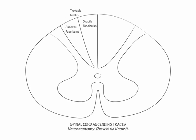Now label the long, narrow anterolateral system in the anterior funiculus. The anterolateral system comprises small diameter sensory pathways. They carry non-discriminative touch, pain, and thermal sensory information. These fibers have either very thin amounts of myelin or no myelin at all, so action potentials ascend these axons slowly.